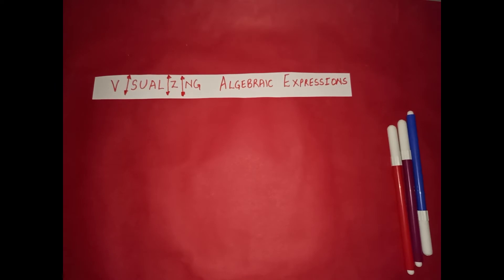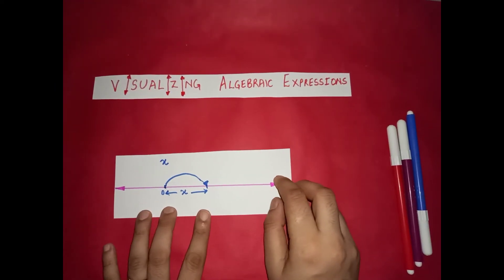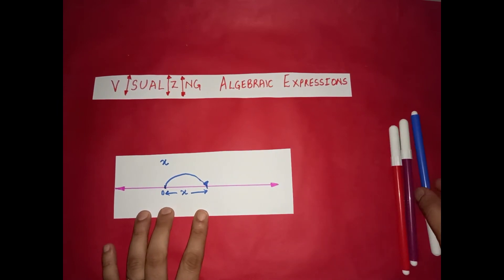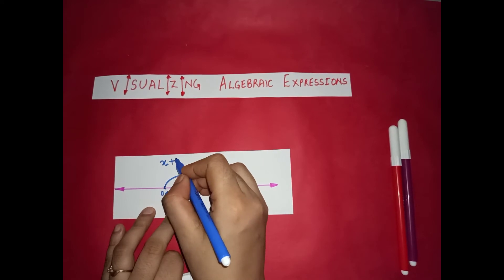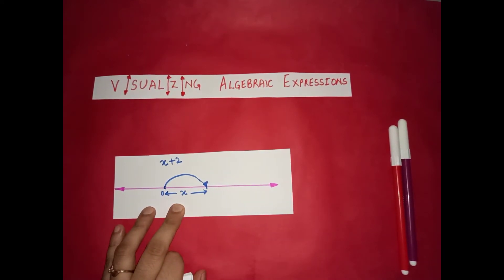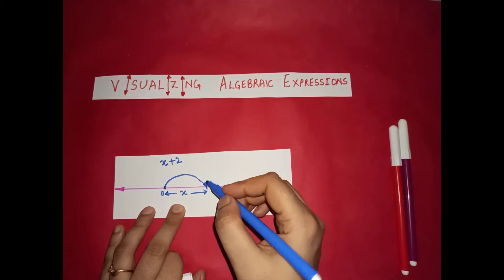Let us take some more. We represented x with one jump of x. What if we want to represent x plus 2? So one jump of x we have already made but we need to make two more jumps of positive 1. Because the jumps are positive we need to move in the right direction, that is the positive direction only.